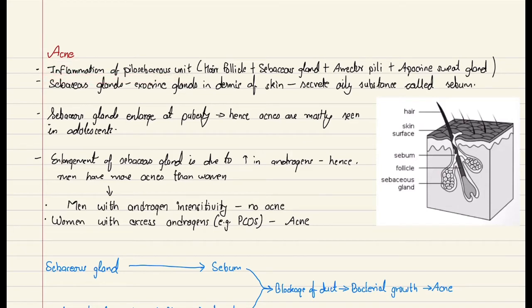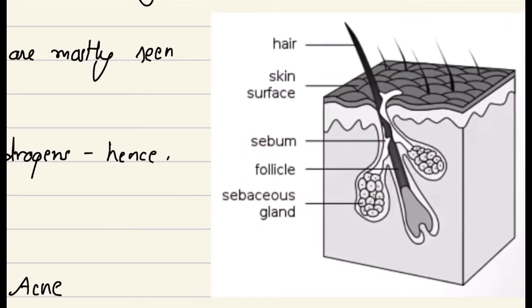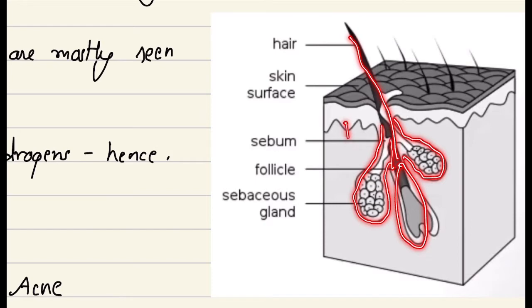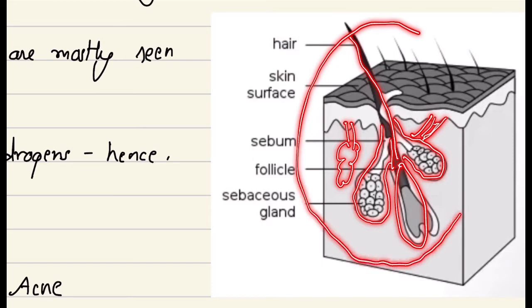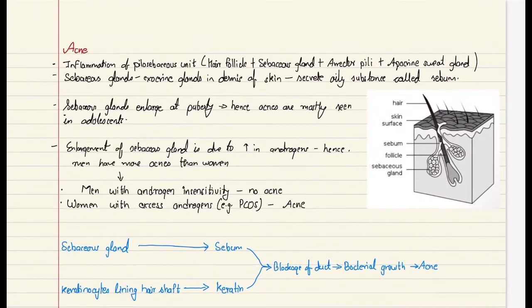Acne is the inflammation of the pilosebaceous unit. The pilosebaceous unit consists of hair follicles, sebaceous gland, erector pili muscle, and apocrine sweat glands. If you look into this picture right here, we have the hair shaft, the hair follicle, surrounded by these sebaceous glands with their ducts, and there are also some apocrine sweat glands and erector pili muscles. Altogether, these structures are known as the pilosebaceous unit, and the inflammation of this unit is known as acne.